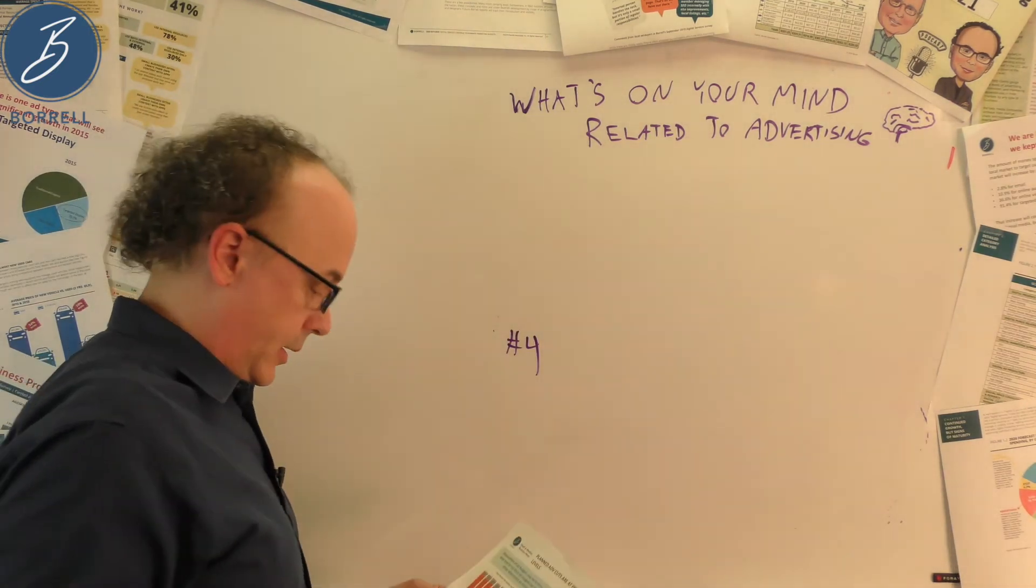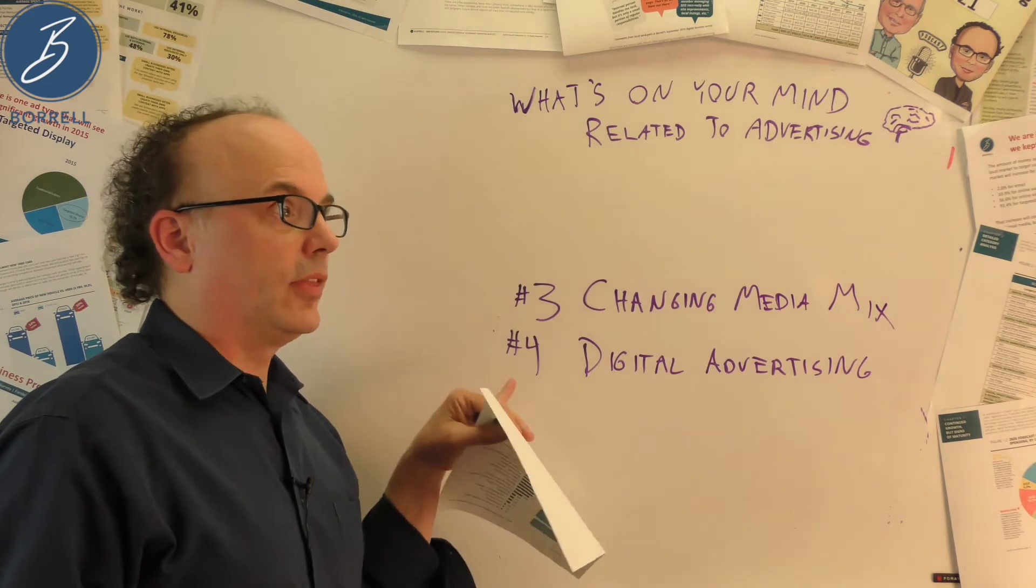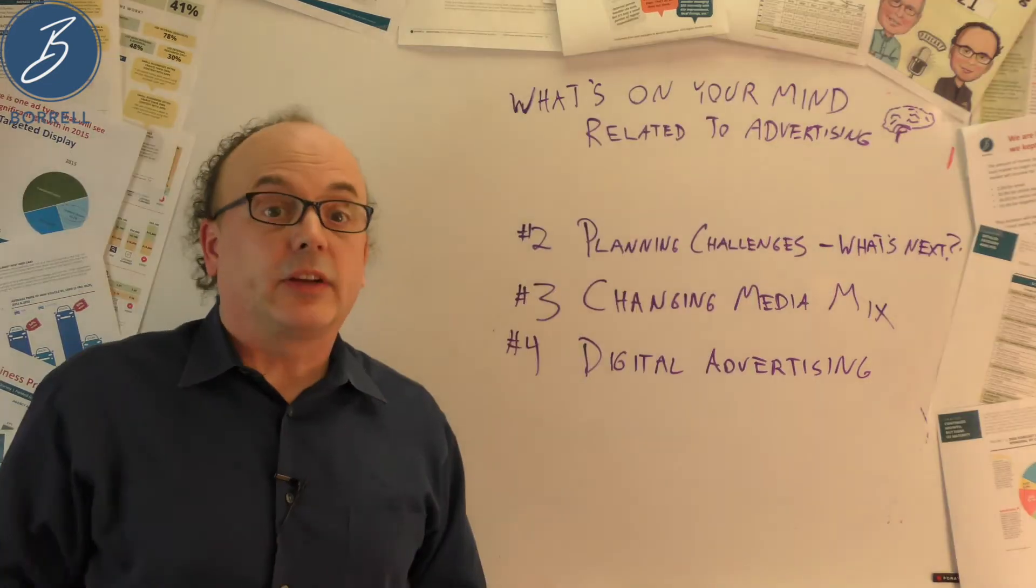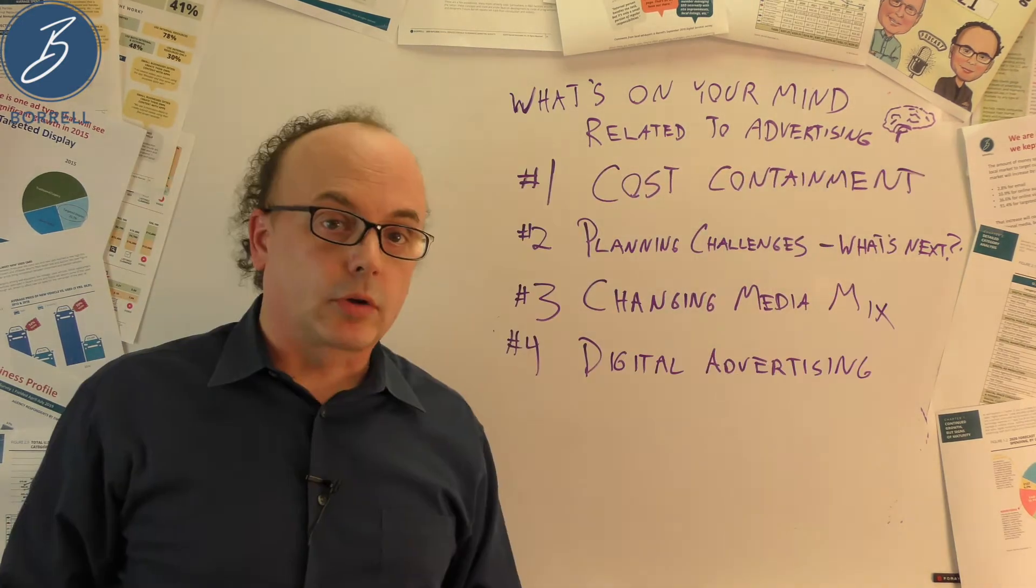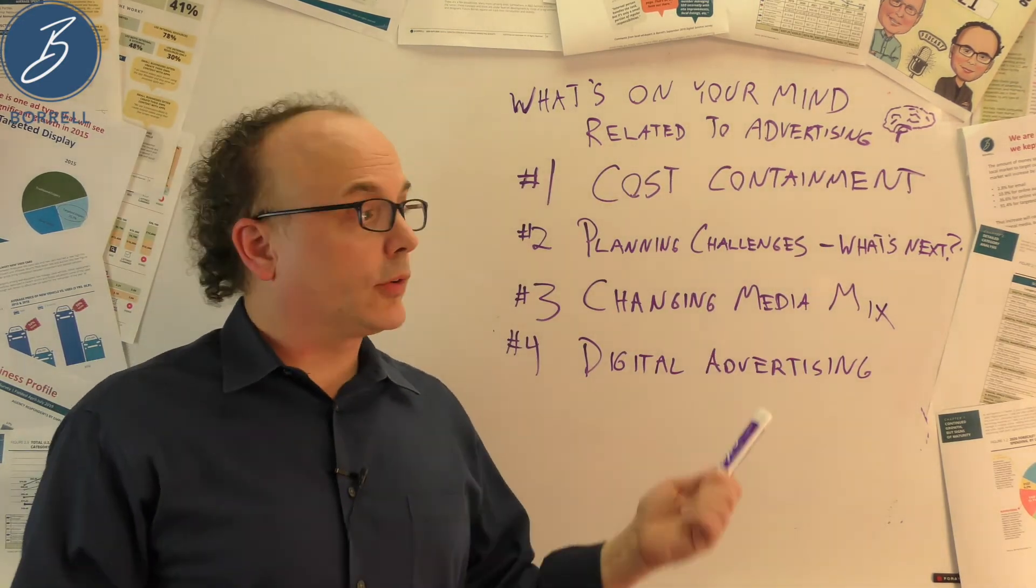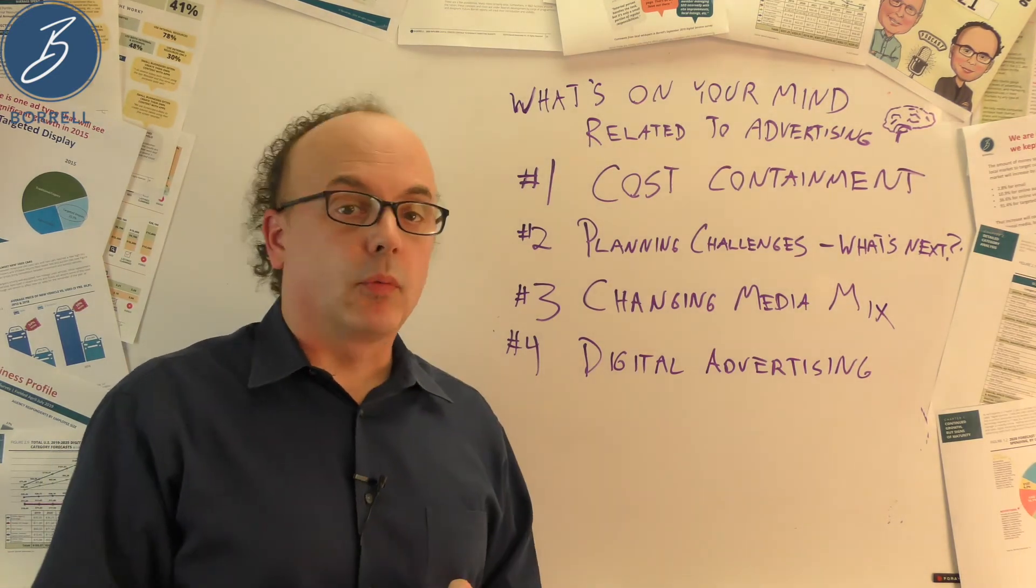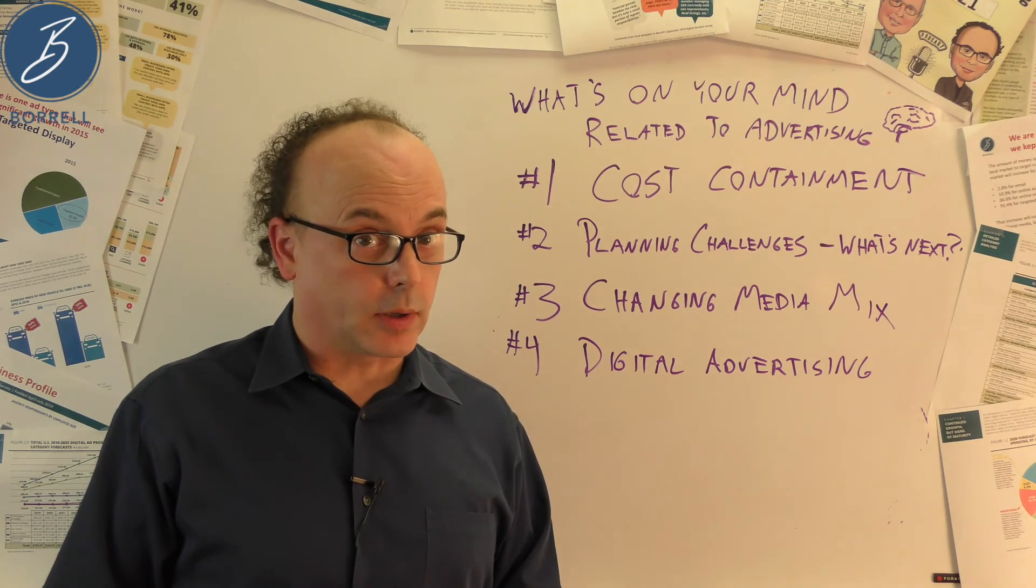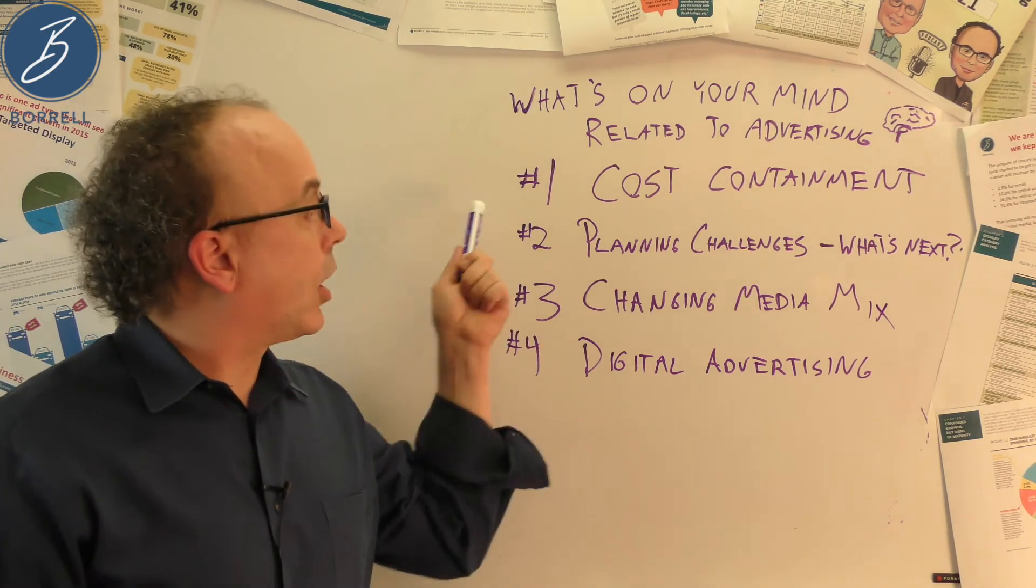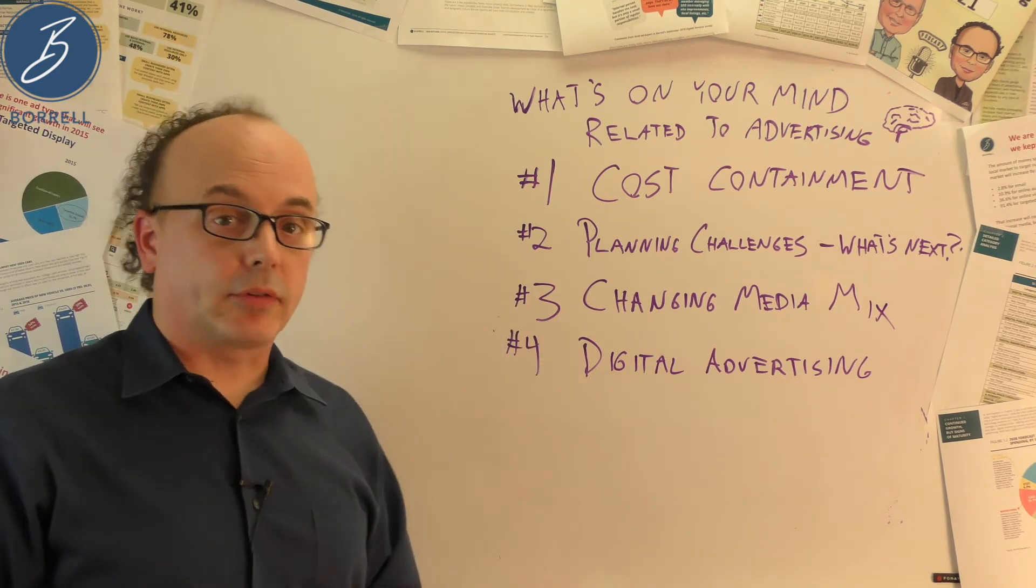Number four thing on their mind. Digital advertising. Changing their media mix. Isn't that interesting? Planning challenges. Trying to understand what's going to come next. And the number one thing on their mind? Cost containment. Not surprising. So as advertisers look at the next six months, they're getting more and more optimistic. Slowly, but surely. It's taken a while. We're not quite back to pre-pandemic optimism, but we're a heck of a lot better than March 2020. And these are the four things on their mind. Cost containment. Planning challenges. Changing their media mix. And digital advertising.